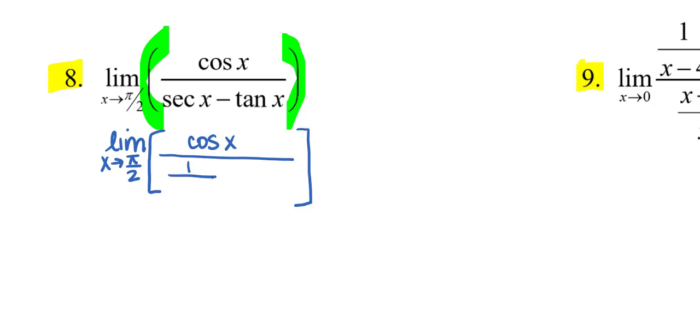I'm going to copy down limit as x approaches pi over 2, and I'm just going to leave that for right now. There's nothing I can really do with my numerator right this second, but my denominator, I absolutely can write all of these in terms of sine and cosine to see if something kind of jumps out at me. Secant of x, for example, is the reciprocal of cosine x. And tangent x would be sine x over cosine x. I hope you can see I have sort of this complex fraction going on where I have fractions within my numerator and or my denominator.